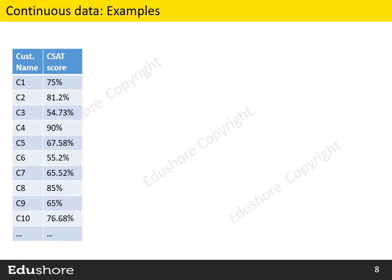Let's look at some examples of continuous data. Let's say, based on a checklist, we captured the customer satisfaction score on how satisfied they are with our services. Since this data consists of numbers that are calculated using a formula and the data assumes decimal values, it is continuous.